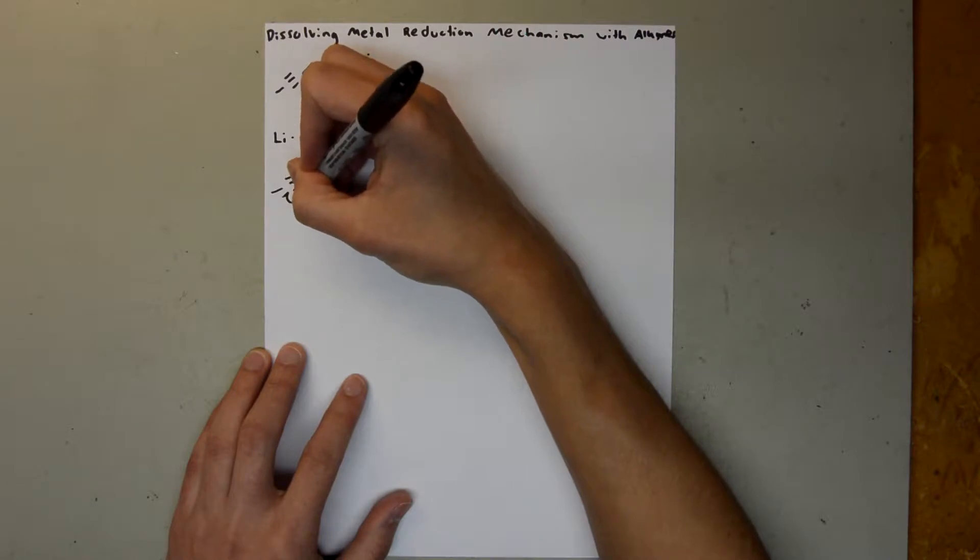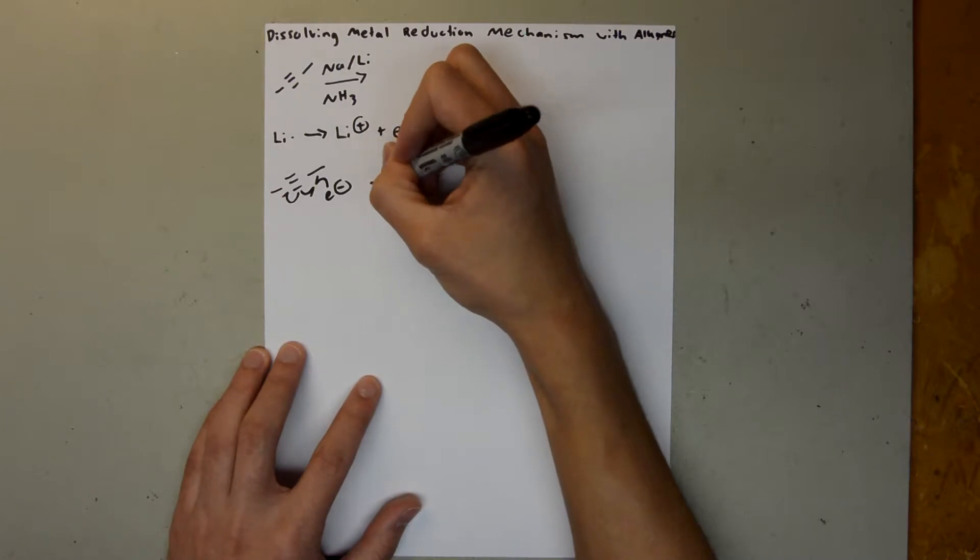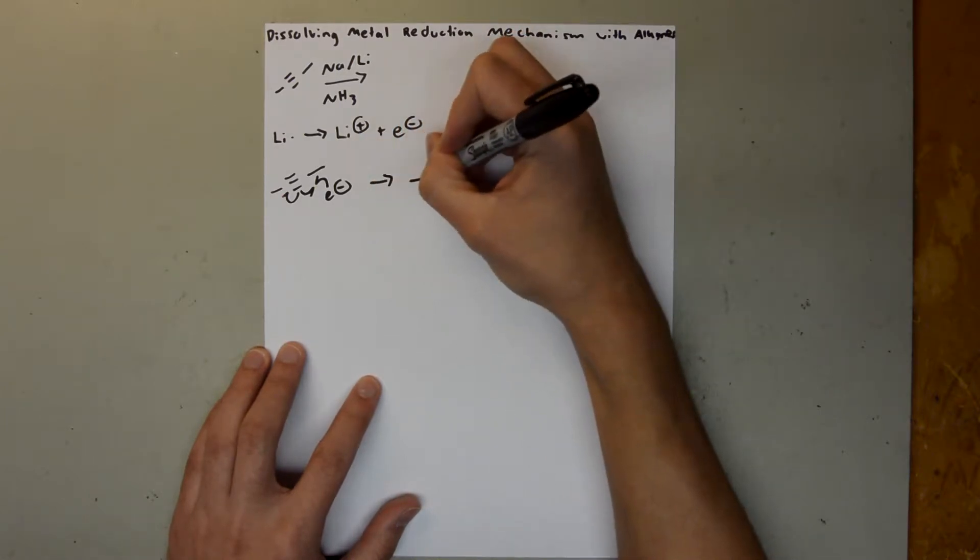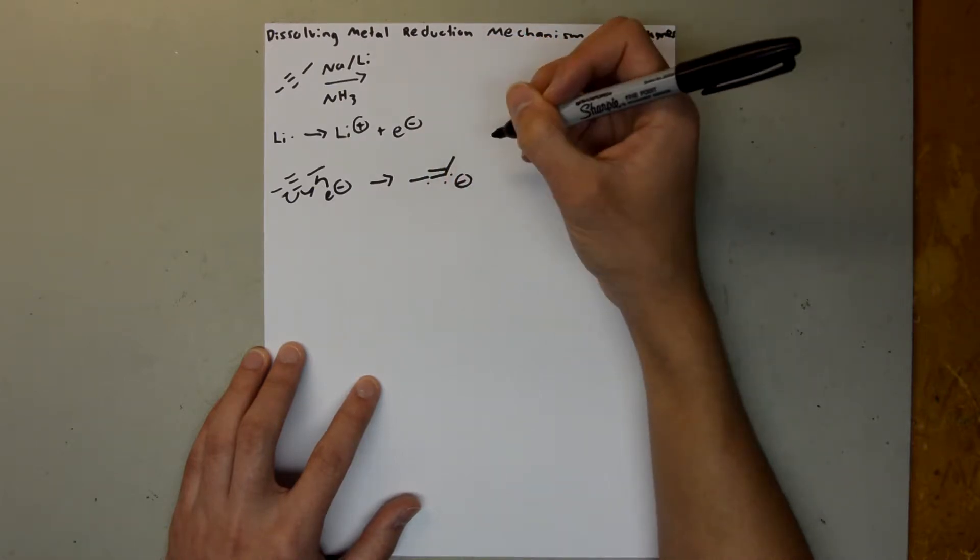And then another electron is going to bond with this electron. And we're going to form this with one electron here and a lone pair here, and that's going to have a negative formal charge.